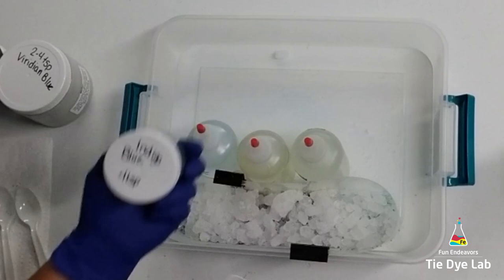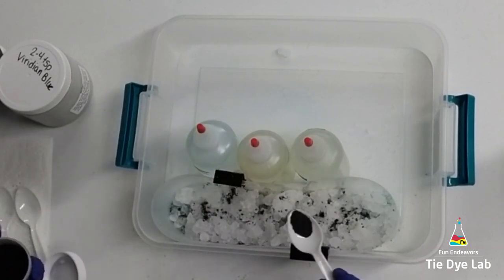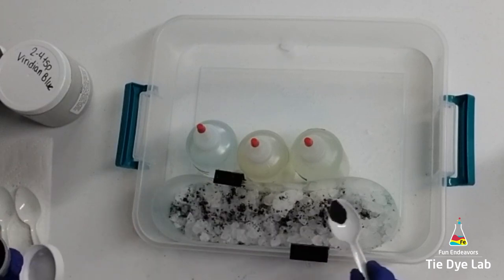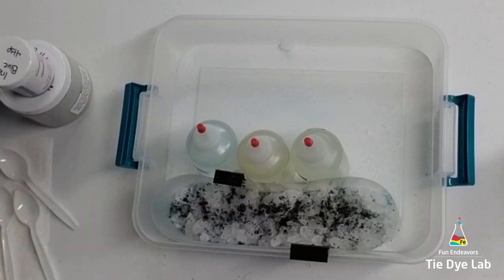I'm going to add another very thin layer of Indigo Blue over the top of my ice, just to add a little bit of extra depth to my color. Now I'm going to put it aside, let it process for at least 24 to 36 hours after my ice melts.